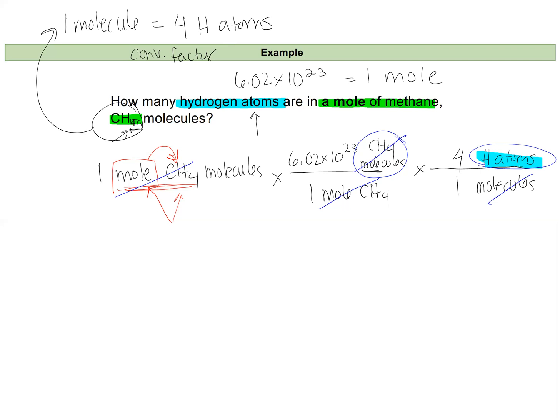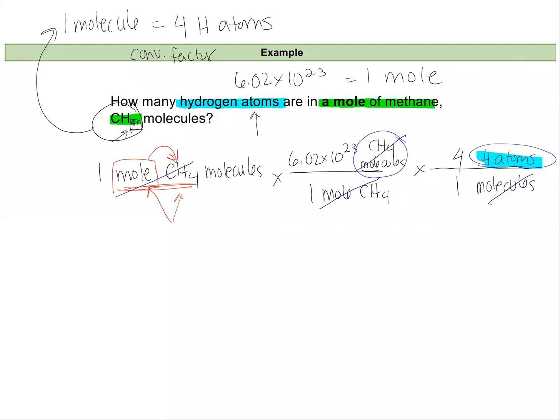So I can plug this into my calculator here. And I can calculate the number of atoms that I have, which is going to be 2.4 times 10 to the 24th hydrogen atoms. A lot of hydrogen atoms.